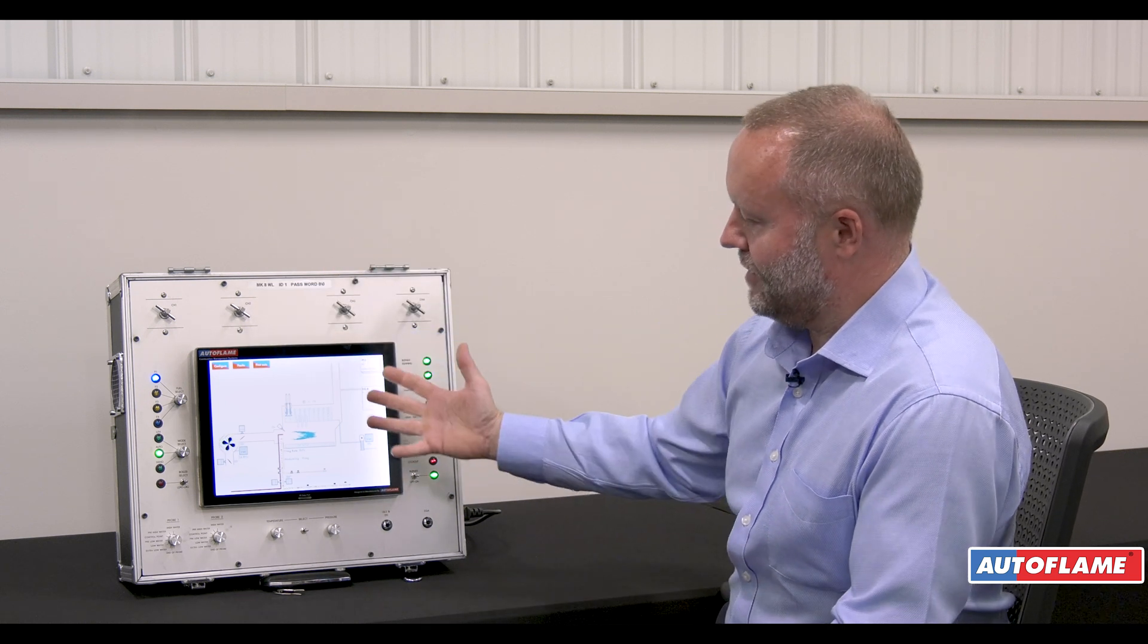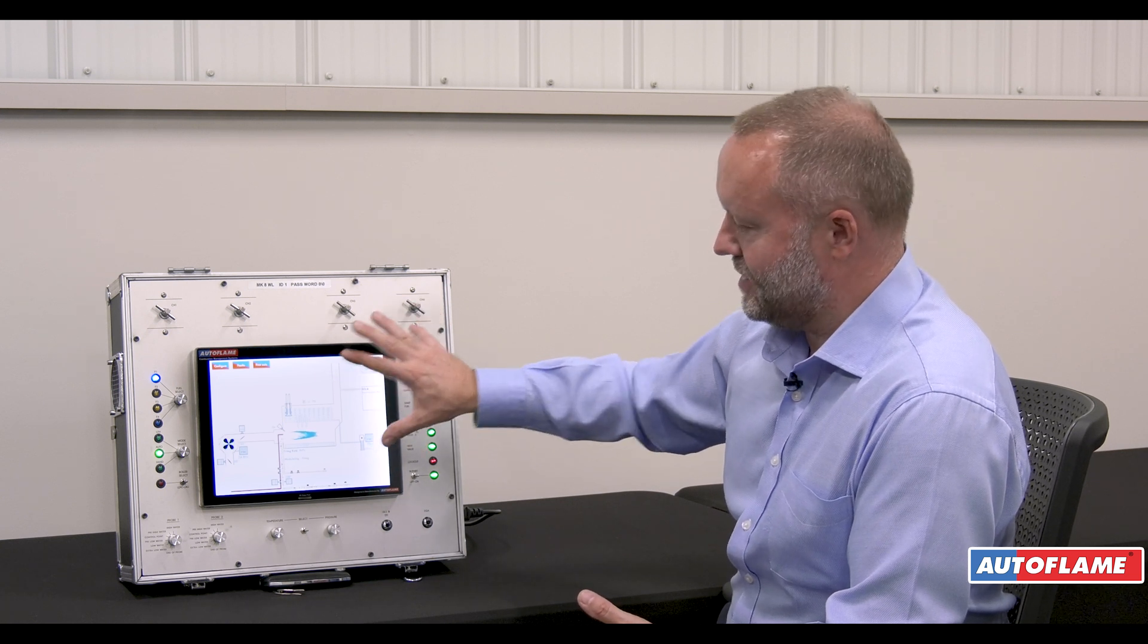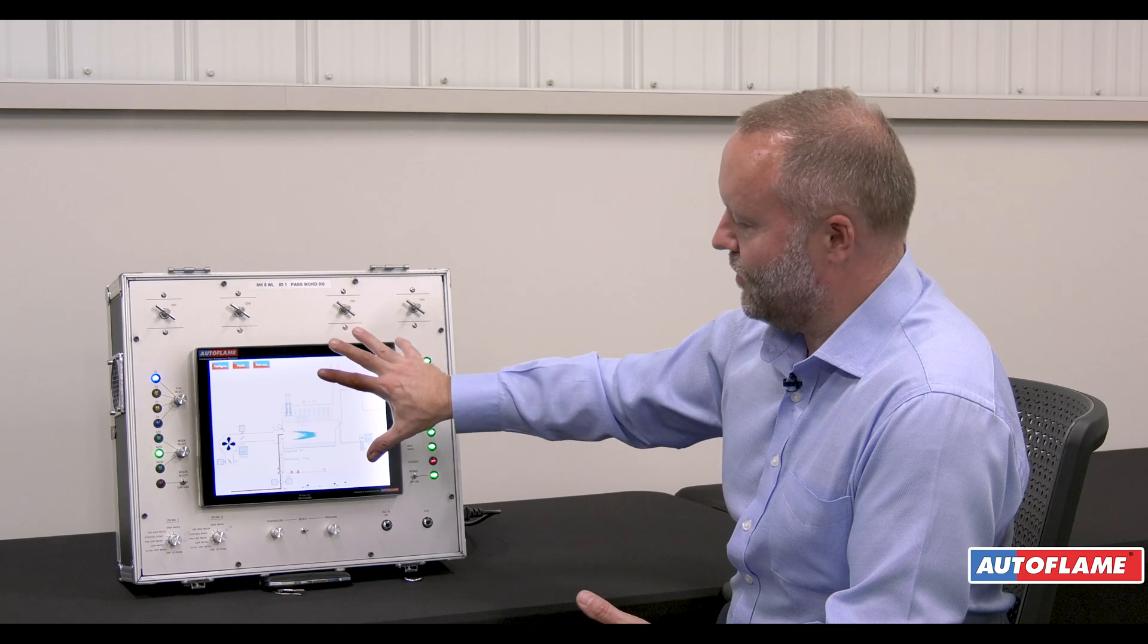The last thing we want is someone getting into the system, hacking in through a back door and closing off the air damper, making the boiler very unsafe. So with our system, it is not a PLC, it cannot be accessed remotely. We can't tie in through Wi-Fi or Bluetooth. This is hard-written code within the controller.